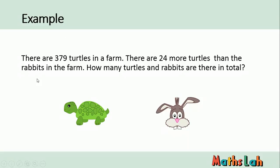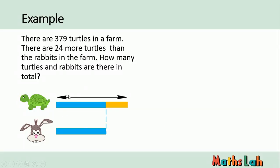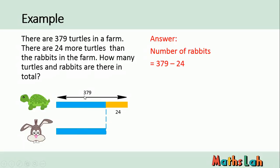This is today's last example. There are 379 turtles in the farm. There are 24 more turtles than rabbits in the farm. How many turtles and rabbits are there in total? This blue and orange bar gives you the total number of turtles. Since there are 24 more turtles than rabbits, the rabbits are less by 24. Using the diagram, we can find the number of rabbits easily — it's the total minus the orange part, which is 355.